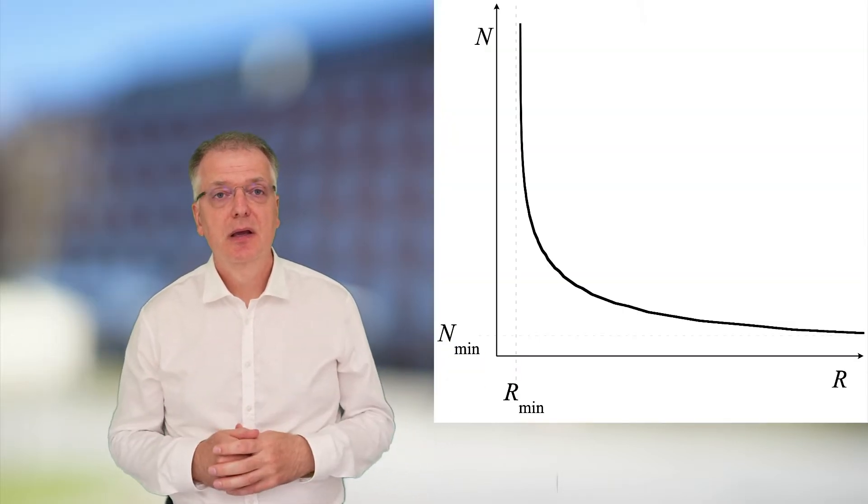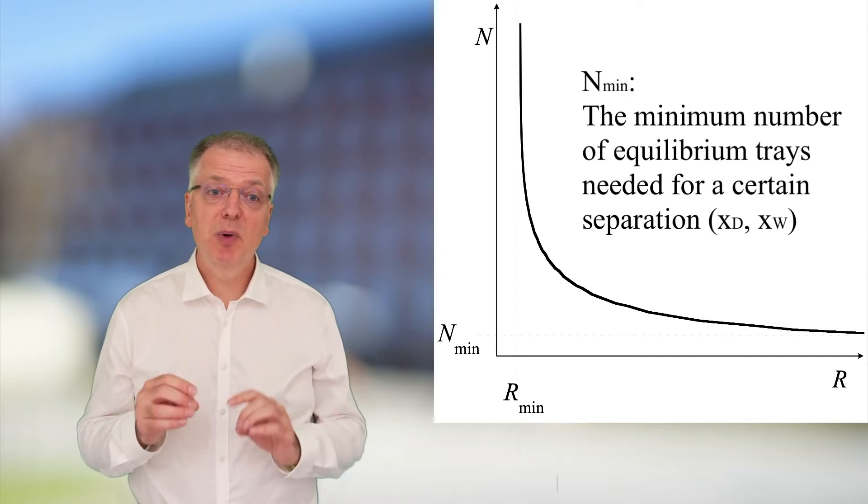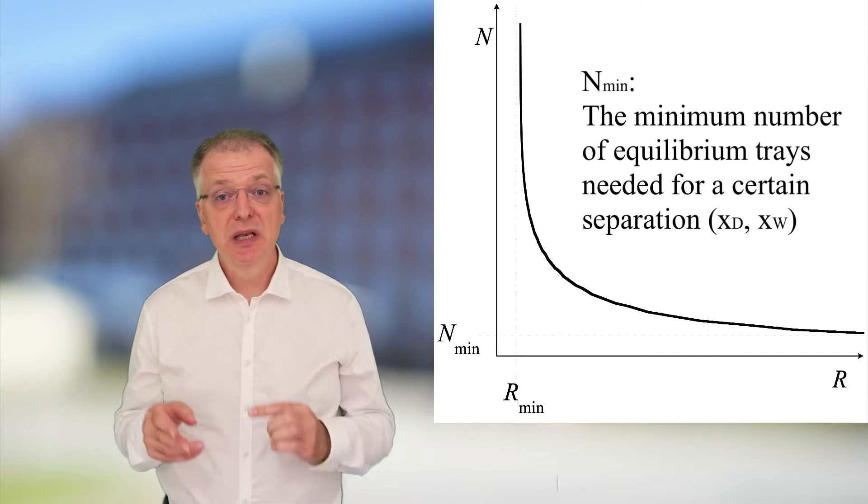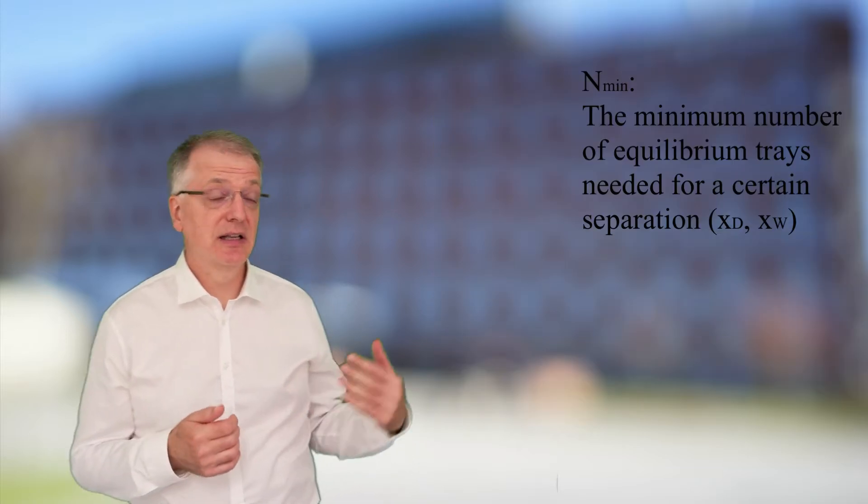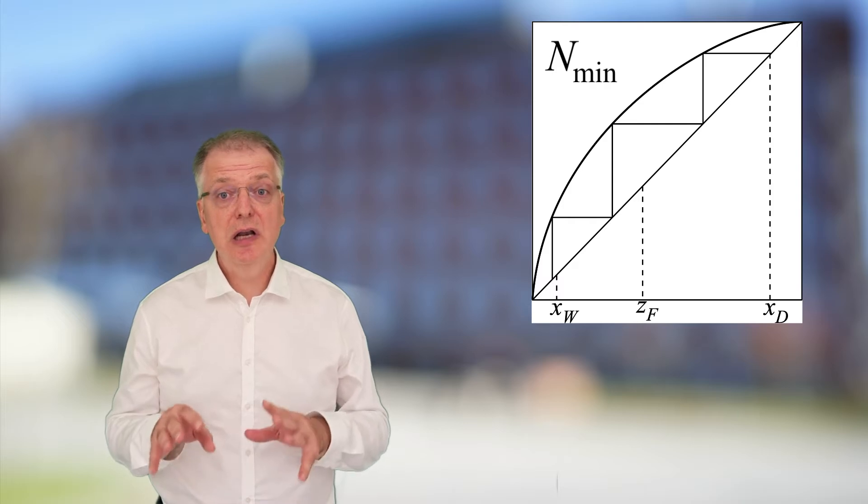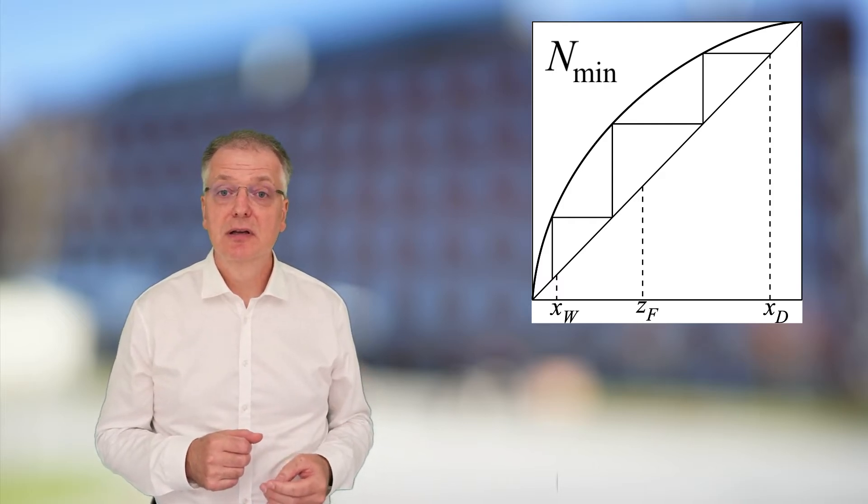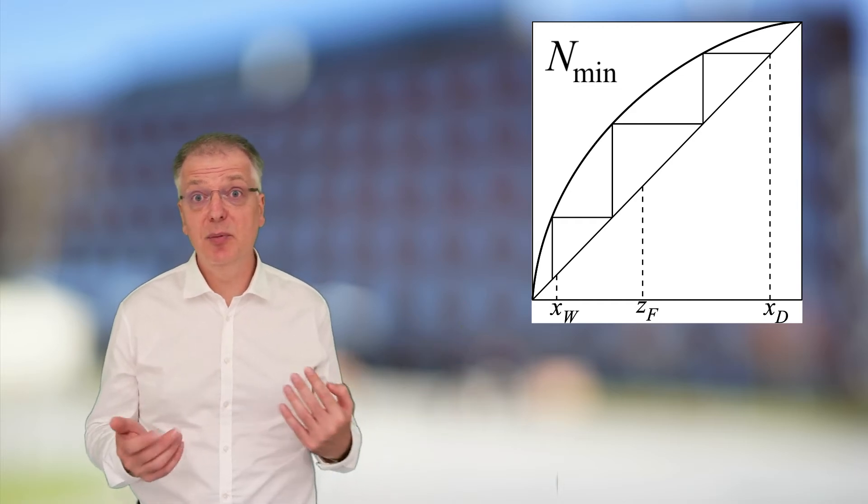Two extremes. The minimum number of equilibrium trays is the minimum number of equilibrium trays we need to achieve a certain separation, a certain difference between the composition in the distillate and the composition in the bottom product XW and XD. N-min depends on the characteristics of the system curve. You can easily calculate N-min graphically regardless of the composition of the feed, as long as the feed composition is in between XD and XW.